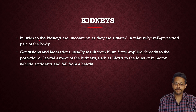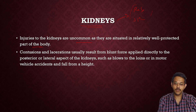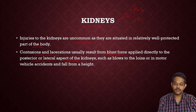Injuries to the kidneys are uncommon as they are situated in a relatively well-protected part of the body, protected by the ribs anteriorly and the spine posteriorly. However, contusions and lacerations may result from blunt force applied directly to the posterior or lateral aspect of the kidneys, such as blows to the loins, motorbike accidents, or falls from height.